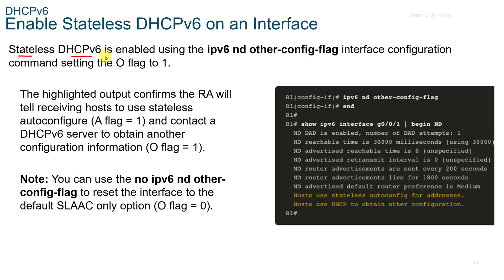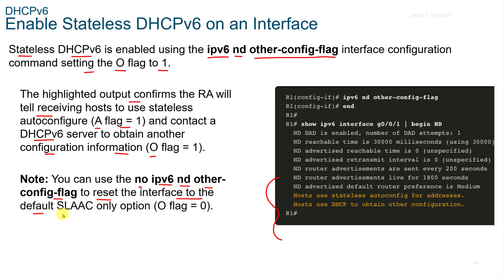Stateless DHCPv6 is enabled using the IPv6 ND other-config-flag interface configuration command, setting the O flag to 1. The highlighted output confirms the RA will tell receiving hosts to use stateless auto-configure with A flag equals 1, and to contact a V6 server for other configuration information with O flag equals 1. You can use the no IPv6 ND other-config-flag command to reset the interface to the default SLAAC-only option where O flag equals 0.